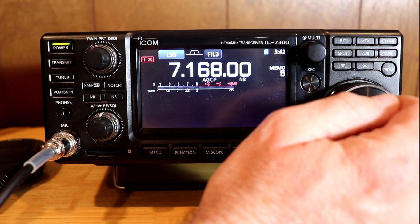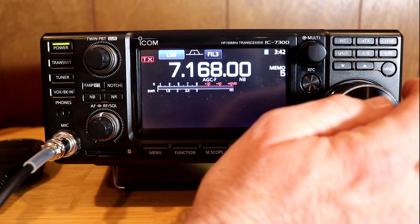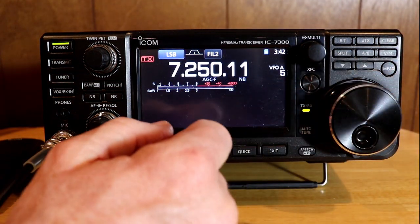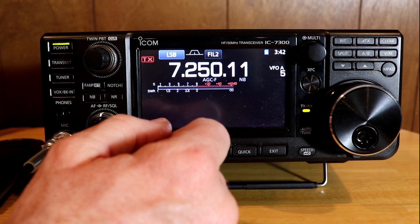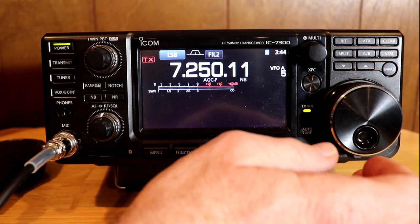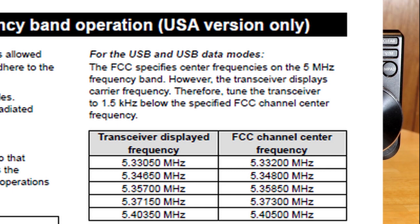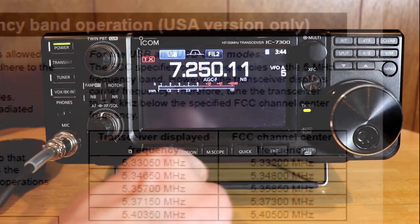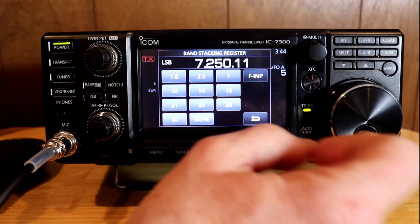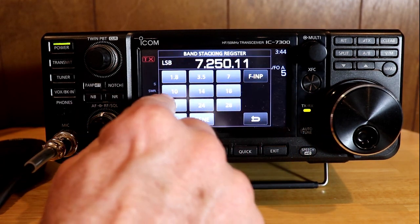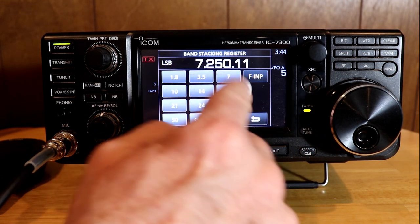So let's look at doing some programming of the memory channels. We're going to go back to VFO mode, and we're going to go to those 60 meter frequencies that we looked at at the end of section three. First, we'll take a look at the frequencies here in the first channel. If I'm going to program it for upper sideband, the frequency I want to program is 5.33050.